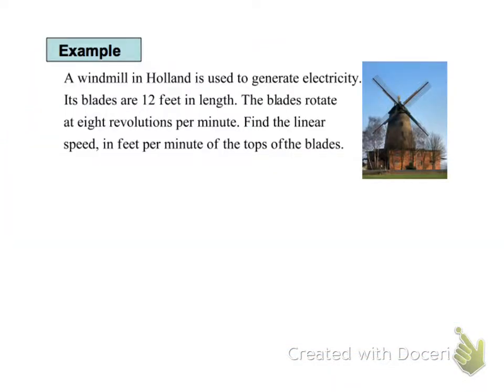A windmill in Holland is used to generate electricity. Its blades are 12 feet in length. And we've seen windmills before. We have a lot of those windmill kind of areas here. So 12 feet in length is the length of a blade. And they rotate at 8 revolutions per minute. So in one minute, that blade goes around 8 times. And I want the linear speed in terms of feet per minute.